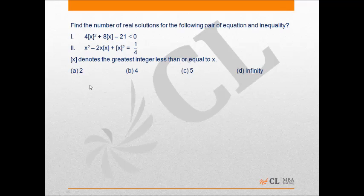Upon looking at the inequality, I can simplify it as follows: 4 times box bracket x whole square plus 14 times box bracket x minus 6 times box bracket x minus 21 is less than 0. That gives me box bracket x plus 7/2 into box bracket x minus 3/2 is less than 0.